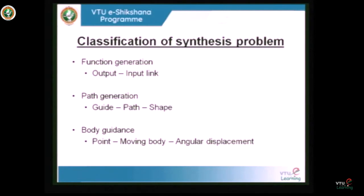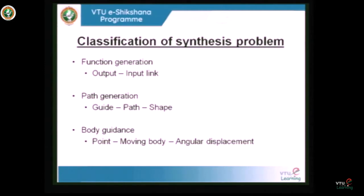In path generation, the mechanism is required to guide a point — also called the coupler point — along a path having a prescribed shape. We want to trace a path using a guiding coupler point to obtain a required or desired shape, such as an elliptical or circular arc. Body guidance involves both the position of a point within the moving body and its displacement being specified, where the angular displacement is also mentioned.